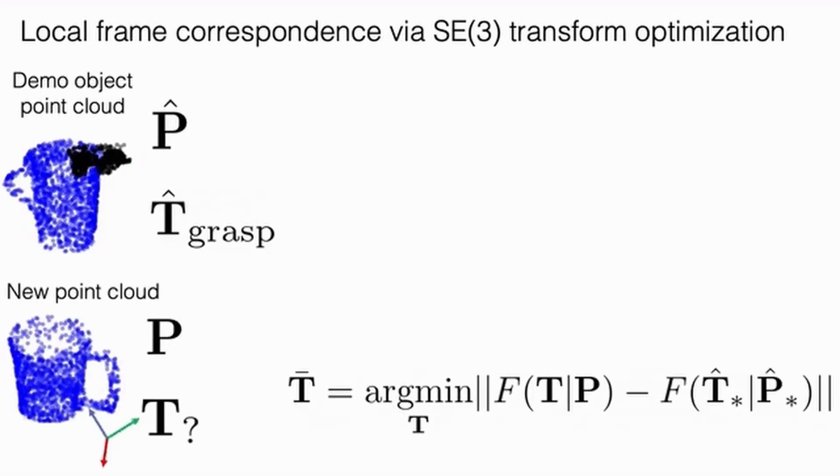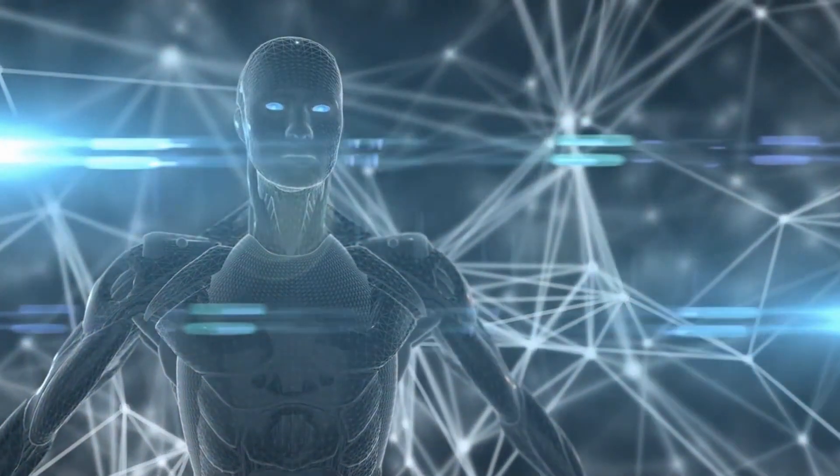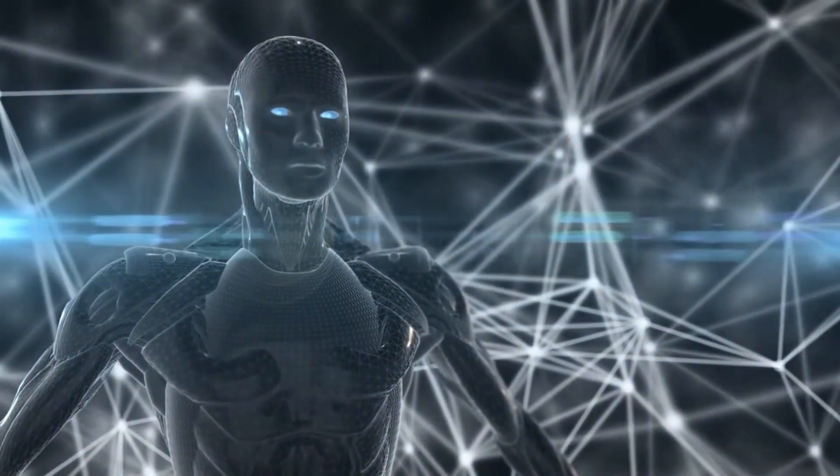A robot may be trained to pick up a specific item, but if that object is lying on its side, the robot sees this as a completely new scenario. This is one of the reasons why it's so hard for machine learning systems to generalize to new object orientations.